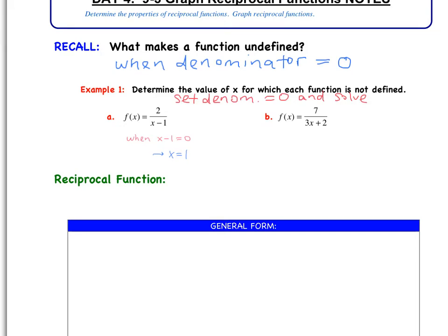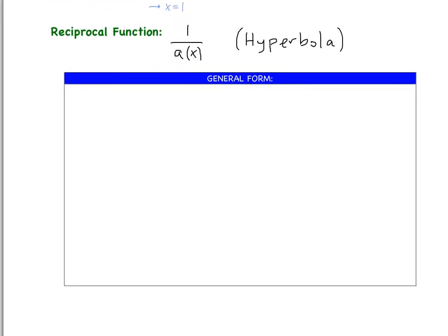What we need to understand is what exactly a reciprocal function is. A reciprocal function is in the form 1 over a(x), where a(x) is a polynomial of some sort. This is also known as a hyperbola, which we may get to next chapter. The general form is y equals a over x minus h, plus k.